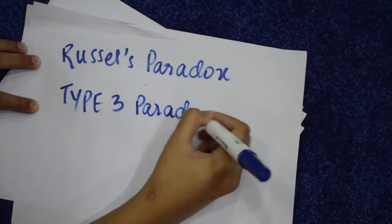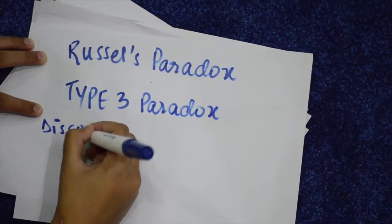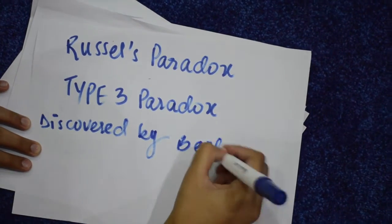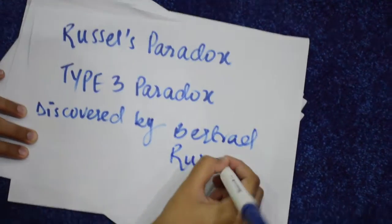Russell's paradox or Russell's antinomy is a Type 3 paradox discovered by the famous British mathematician Bertrand Russell. He presented his paradox in 1901.